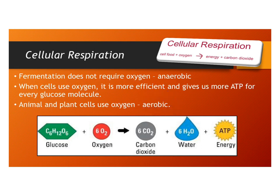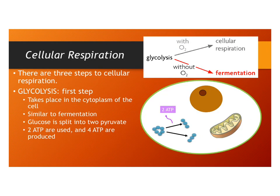There are three steps to cellular respiration. The first step is glycolysis, which takes place in the cytoplasm of the cell. It's similar to fermentation: glucose with six carbons is split into two pyruvate molecules. It yields two ATP net — two are used up in the process and four are produced. With oxygen, glycolysis leads to cellular respiration; without oxygen, it leads to fermentation.